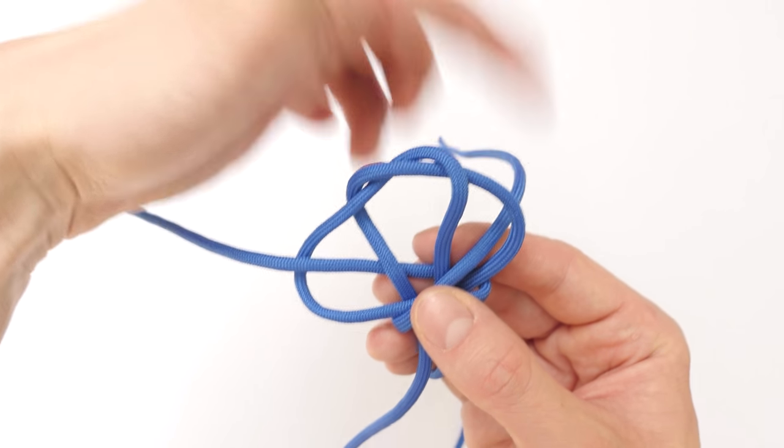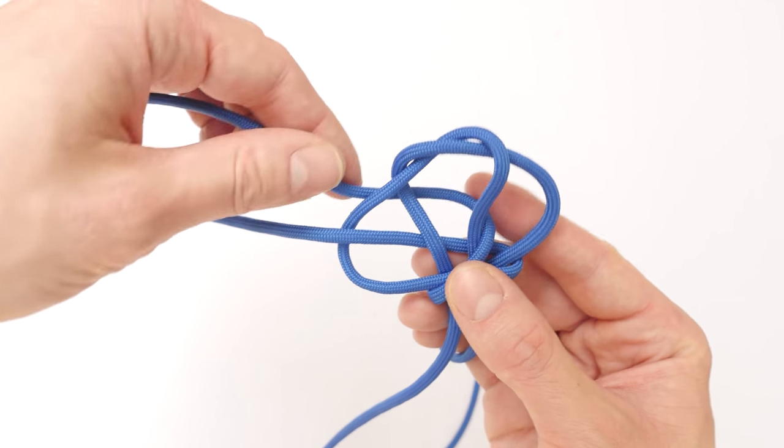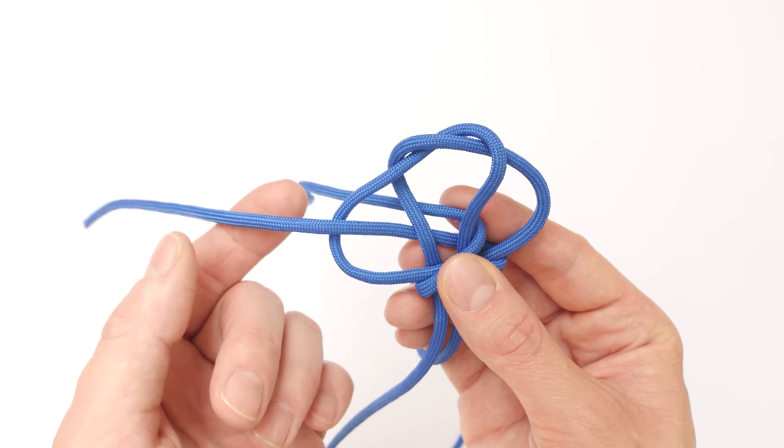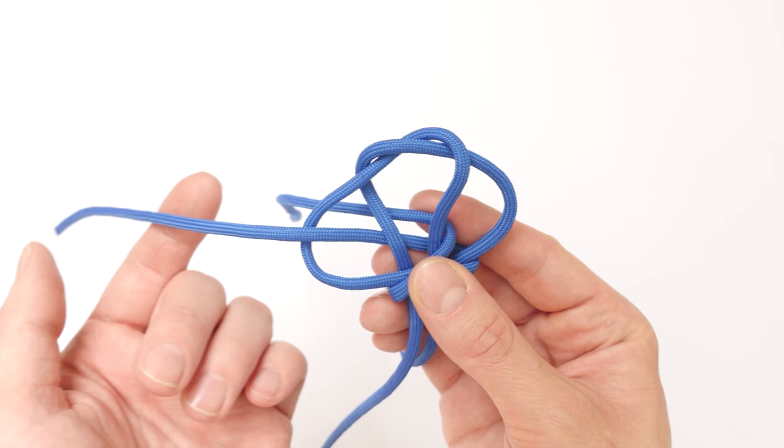Then, with your right cord, go under three towards the left side, and with your left cord, go over three towards the right side.